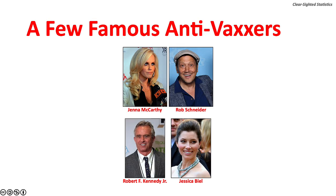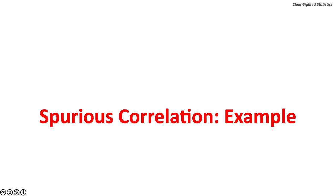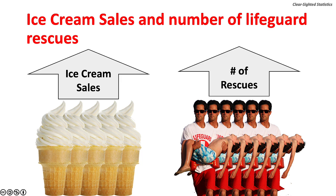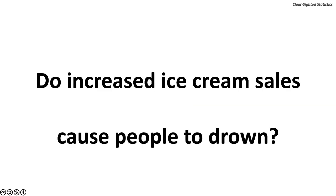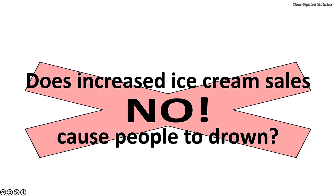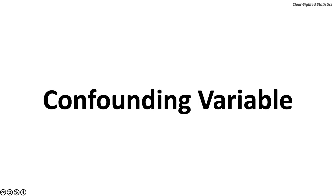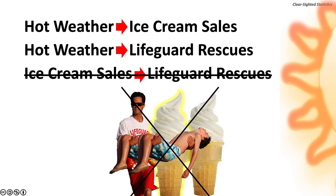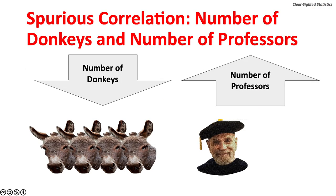This spurious correlation has been spread by anti-vaccine celebrities including actress Jennie McCarthy, comedian Rob Schneider, Robert F. Kennedy Jr., and actress Jennifer Beals. A more lighthearted example: ice cream sales and the number of lifeguard rescues. As ice cream sales on the beach go up, the number of lifeguard rescues goes up, but increased ice cream sales do not cause people to drown. The lurking variable is hot summer weather, which is associated with both ice cream sales and lifeguard rescues.